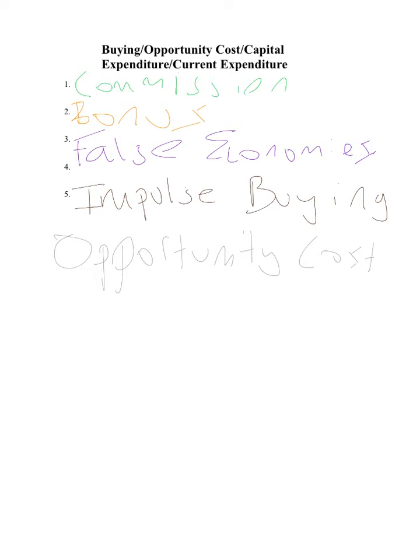The next one is capital expenditure — this is spending on long-term things, things that will last a long time, like a car, like a house, or for the government, like schools. Things that are going to be around a long time — that's what capital expenditure is. Think of capital like a big city — big, long-term spending on items that are going to be around a long time.